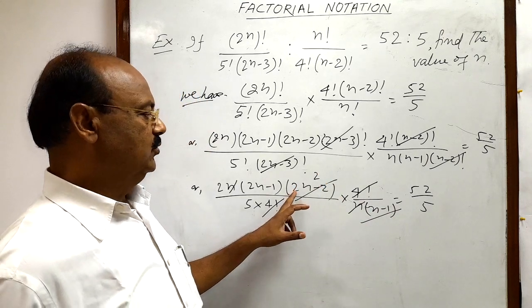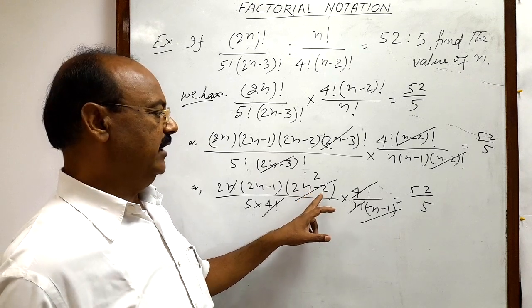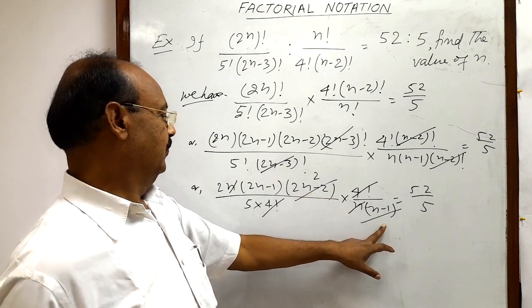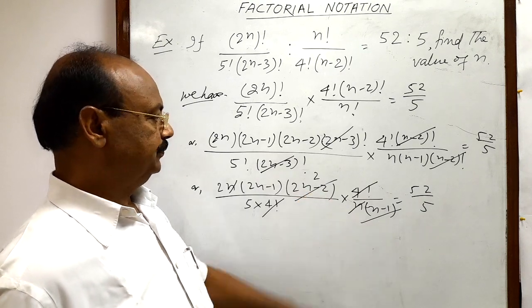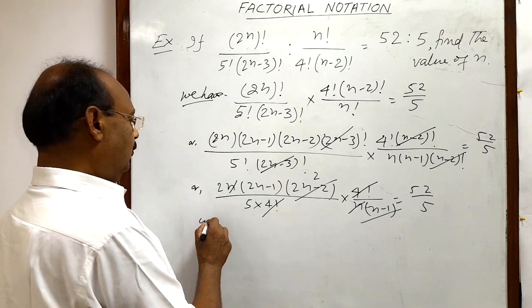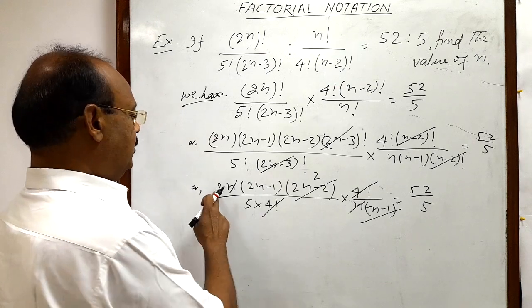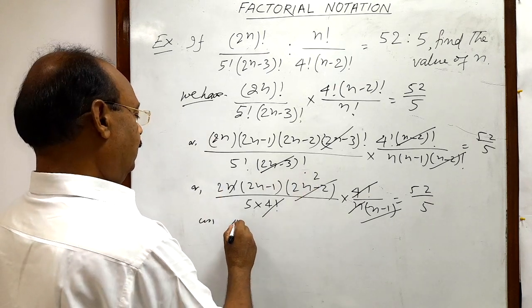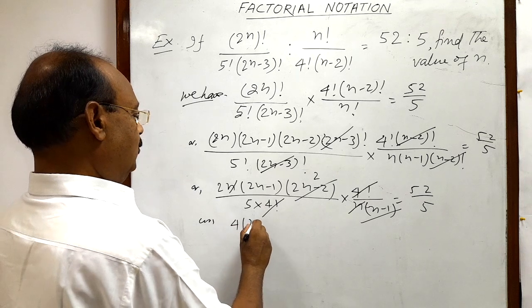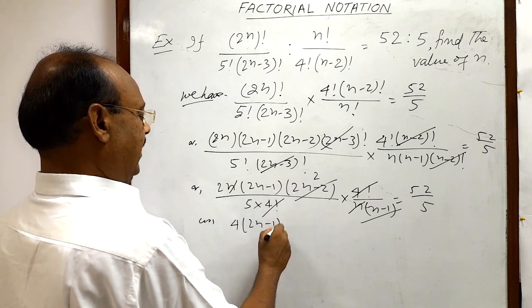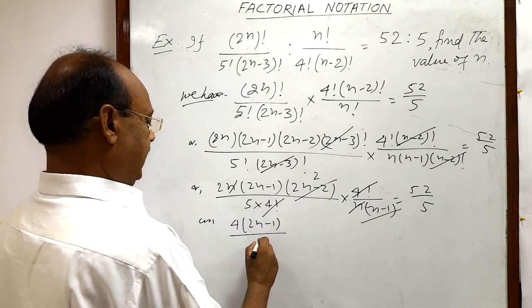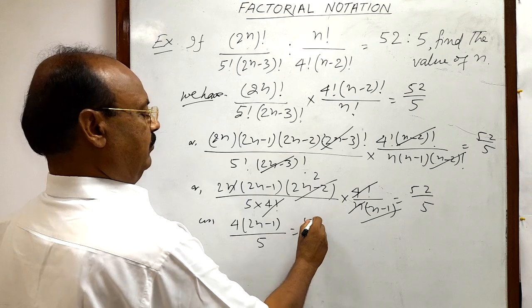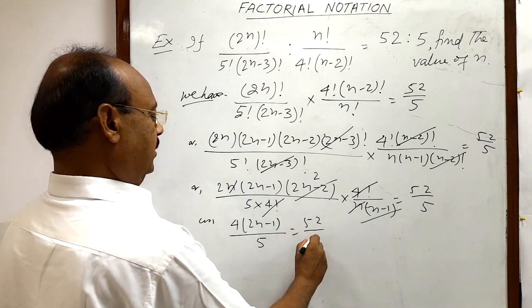After taking 2 common, in the bracket we get (n-1) which cancels with (n-1) in the denominator. So now we are getting 2 times 2, which is 4, times (2n-1) divided by 5, and this is equal to 52 by 5.